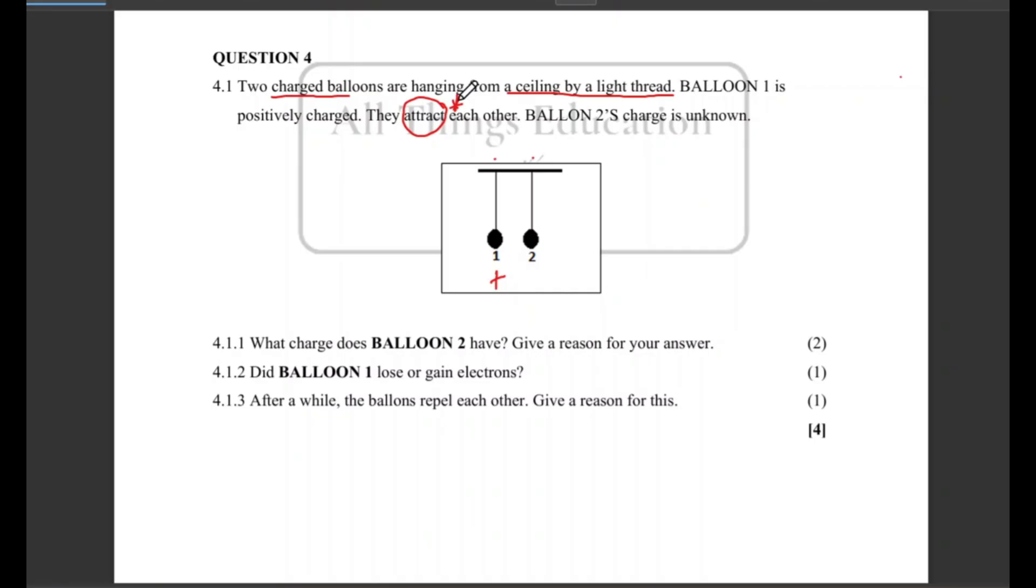And they tell us that these balloons attract each other. This is very important information because it gives us an idea of the charge of balloon two. So they attract each other and they tell us that balloon two's charges are unknown. So they've only given you the charge for balloon one and they've given you the information that these two balloons attract each other.